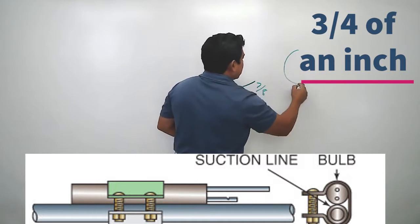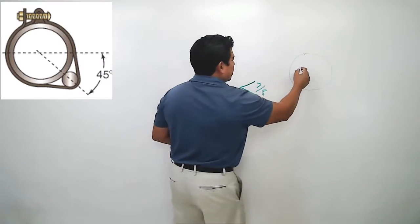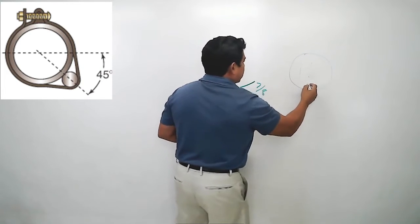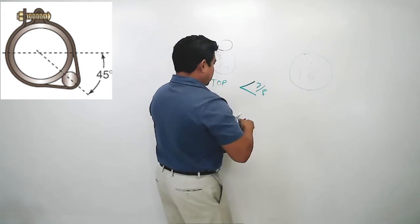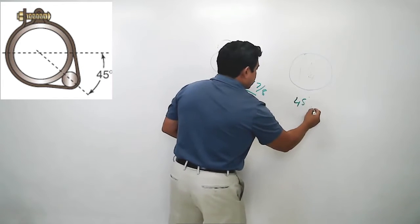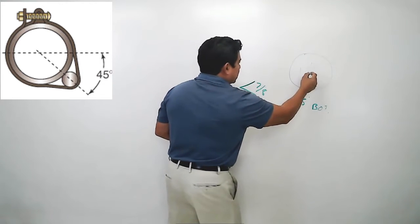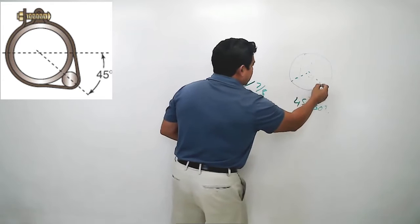If the suction line happens to be greater than seven eighths, let's say for example one and a quarter inch, then it's going to be 45 degrees from the bottom. So we can either place it here or we can place it here.